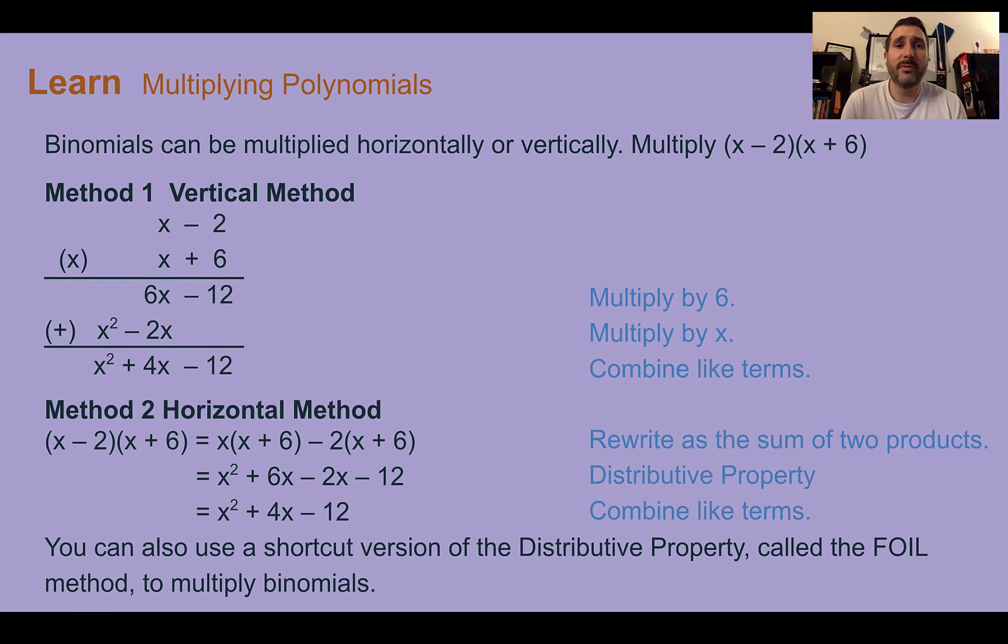In the last lesson, we learned about using the distributive property to multiply monomials with polynomials. In this lesson, we are going to multiply binomials, so two terms with polynomials of varying lengths, usually more binomials, but it could also be trinomials or longer polynomials.